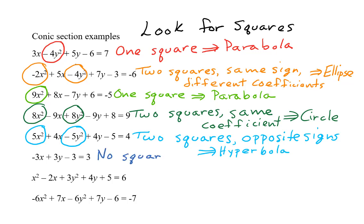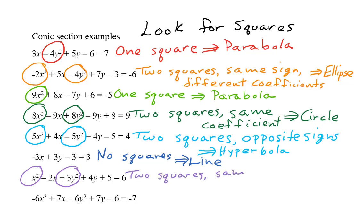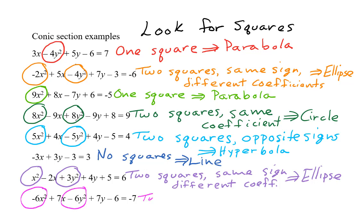Next, we have an equation with no squares at all. This is the equation of a straight line. In the next to last example, we see x squared, which you could think of as 1x squared, and 3y squared — two squared terms with the same sign, both positive, but different coefficients. This equation represents an ellipse. Finally, we have an equation with negative 6x squared and negative 6y squared — two squares with the same coefficient, negative 6. This equation represents a circle.